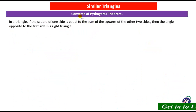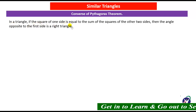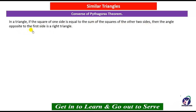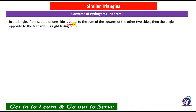Now let us see another theorem — the Converse of the Pythagoras theorem. The statement is: in a triangle, if the square of one side is equal to the sum of the squares of the other two sides, then the angle opposite to the first side is a right angle.